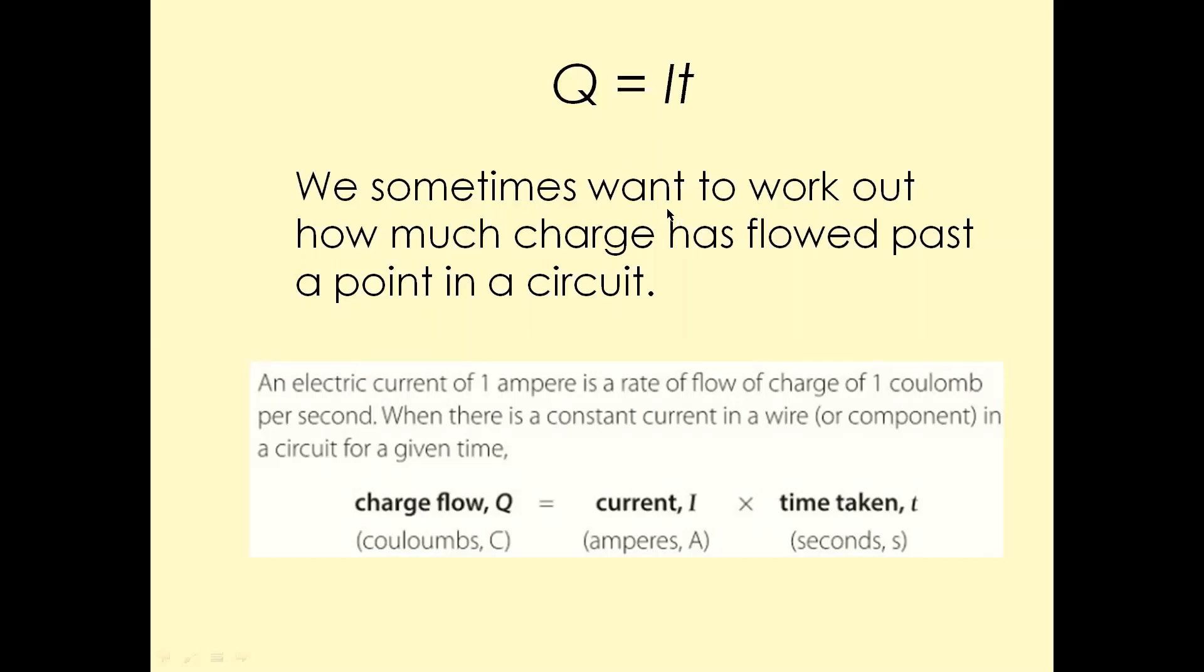Sometimes we want to work out how much charge has flowed past a point in a circuit. That's the formula we normally use. So charge, the symbol is Q, measured in Coulombs C, current symbol is I, measured in amperes or amps A, and time taken is measured in seconds. So you can write this formula down in your book and we're going to look at some of the calculations.